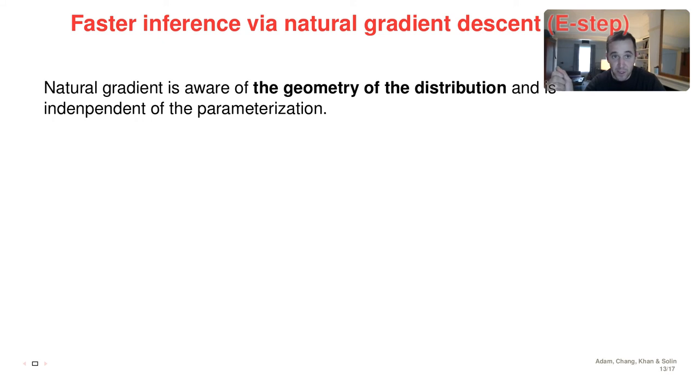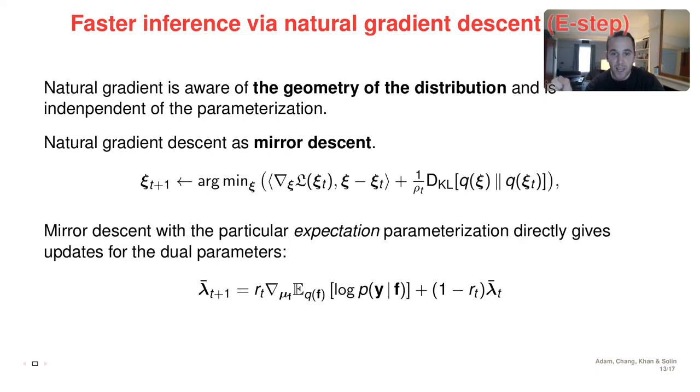And finally, a second advantage that our method has is that we can do also a better E step, which is the inference. So natural gradient descent is an optimization technique that is aware of the geometry of the distribution, and it is independent of the choice of parameterization. So it would be the same for the previous QSVGP parameterization and our parameterization. Natural gradient descent can be written as mirror descent, which is a connection that was established recently. And mirror descent looks like this: it's actually minimizing a linearization of the loss penalized by a KL divergence.